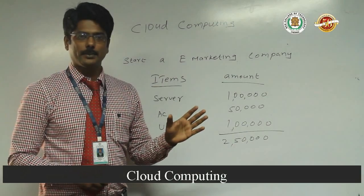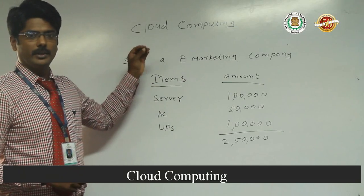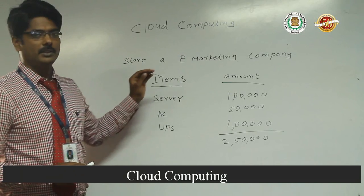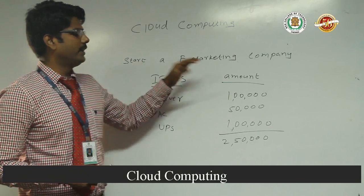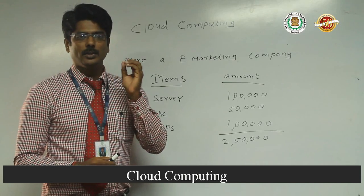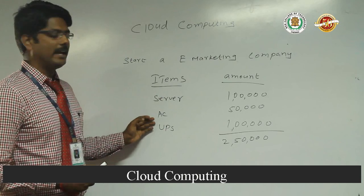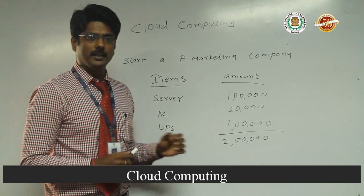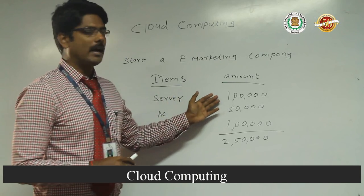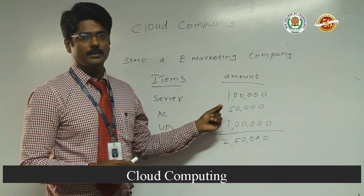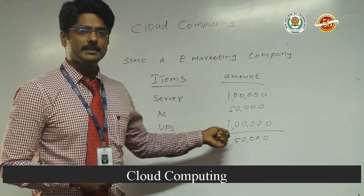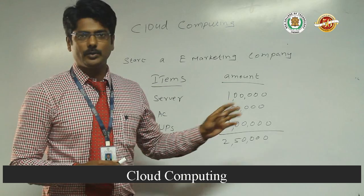Here is a small example of how cloud computing is more advantageous than other technologies. For example, if you want to start up an e-marketing company, the basic things you need are a server, an air conditioner, and a UPS. For the server, you have to spend a minimum of 1 lakh rupees. For the air conditioner, a minimum of 50,000 rupees. And for UPS, a minimum of 1 lakh rupees.